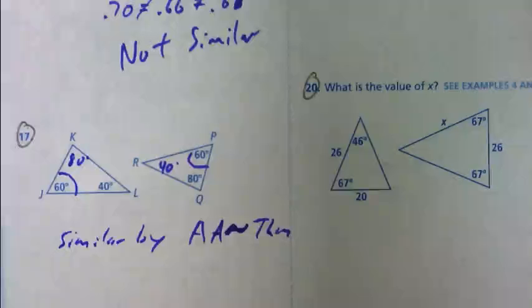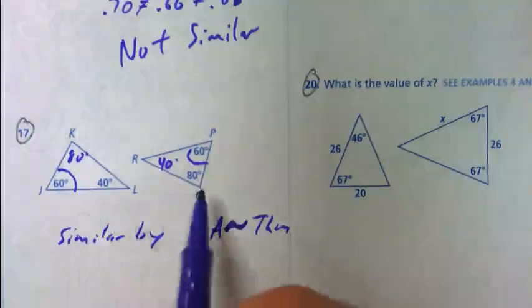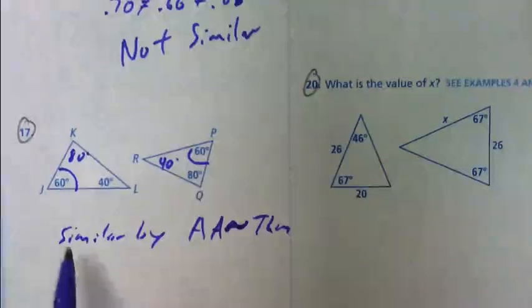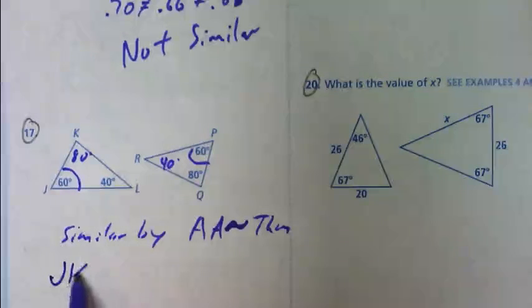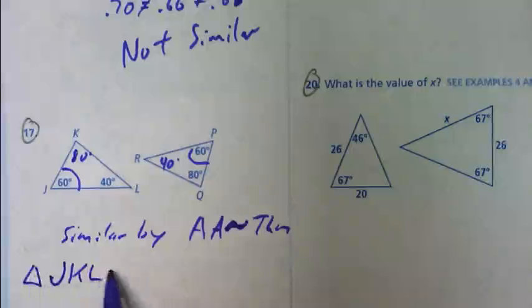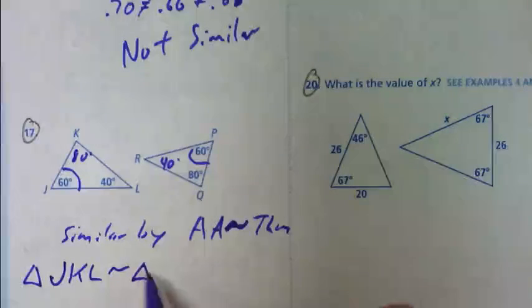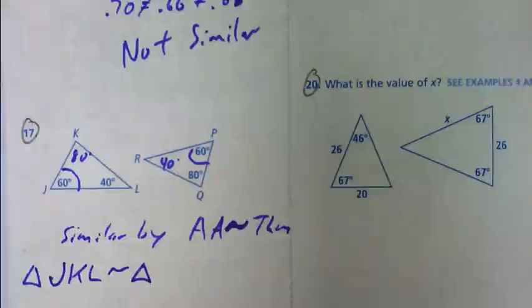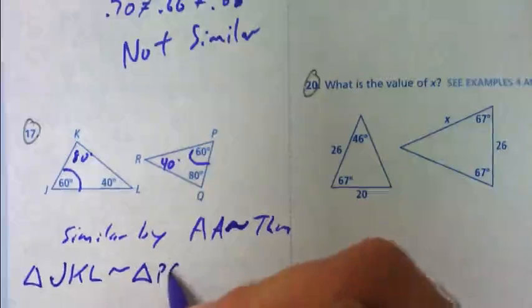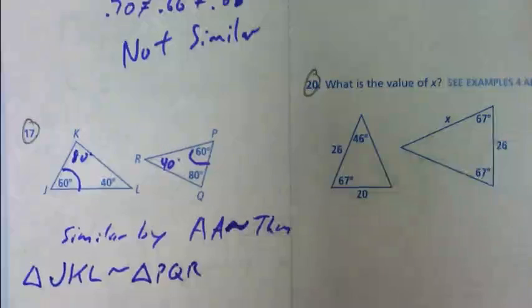Now, I will also ask you on the test to write a similarity statement. So, although it didn't ask us to do that here, let's go ahead and practice. What is our similarity statement for these two triangles? So, let's say I give you the first one as JKL. What order would I then have to go in for the next figure?